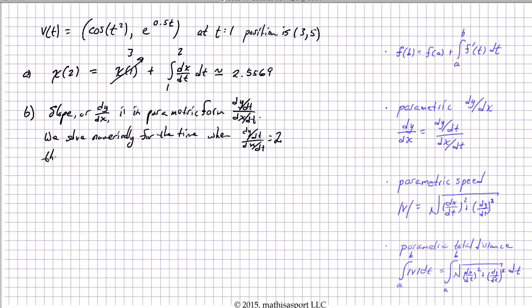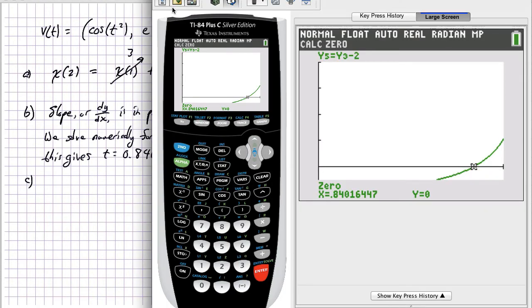This gives 0.8401. Part C asks a similar question: when does the speed of the particle equal 3? Remember, over here illustrated in blue, the definition of speed is the absolute value of the velocity. And in parametric problems, that takes the form of that square root of the sum of the squares of the components of velocity. So we're really just setting that equal to 3.